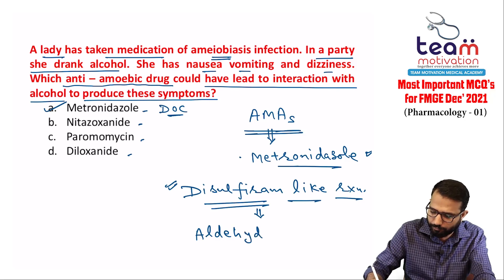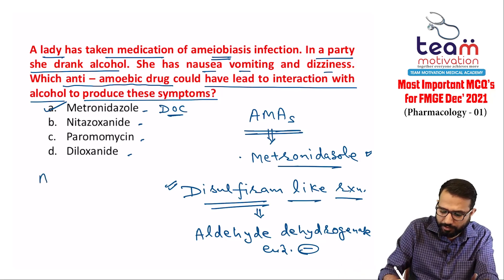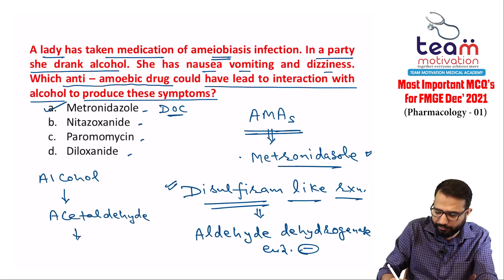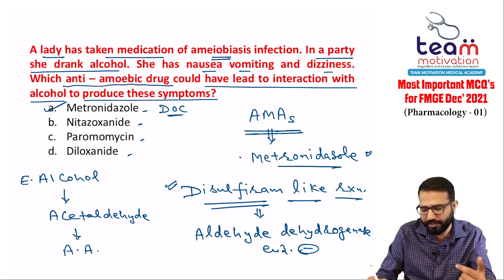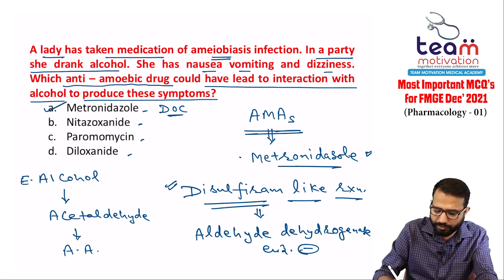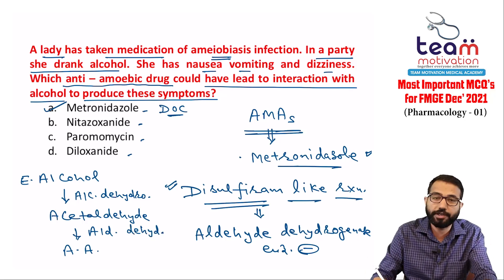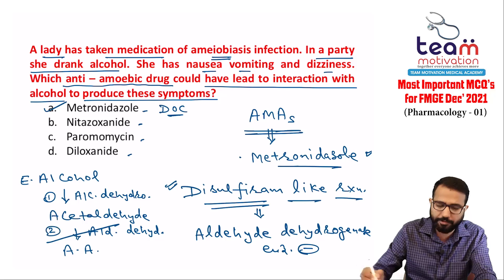Disulfiram inhibits aldehyde dehydrogenase enzyme. In alcohol metabolism: ethyl alcohol converts to acetaldehyde via alcohol dehydrogenase, and acetaldehyde converts to acetic acid via aldehyde dehydrogenase. Drugs causing disulfiram-like reaction inhibit this second step — the aldehyde dehydrogenase enzyme.